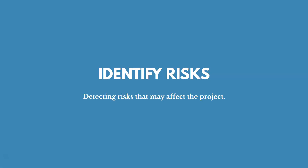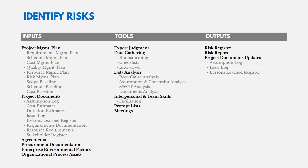Now let's talk about identifying risks — detecting risks that may affect the project. There are a lot of inputs on the left-hand side because there are lots of sources for identifying risks. You want to look at all of your plans to see if you've made any assumptions you may want to track and monitor, since an assumption could be a risk. There are also lots of tools for identifying risks, and the key output is the risk register.